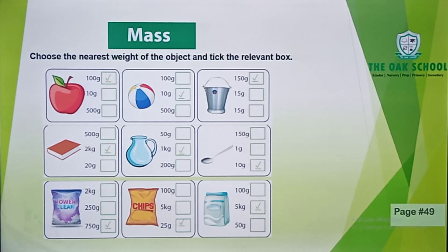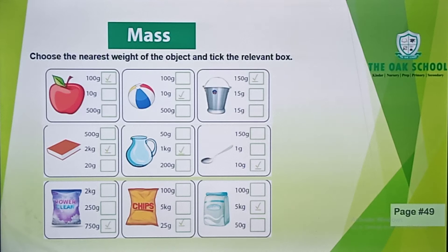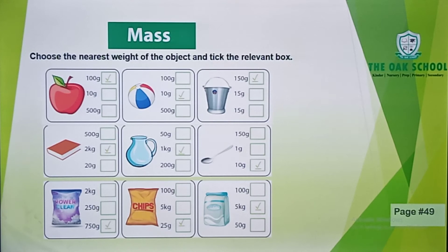Then you have a book with weights of 500 grams, 2 kg, or 20 grams. Different books have different weights. So we have taken the nearest weight of 2 kg and ticked it in the box.